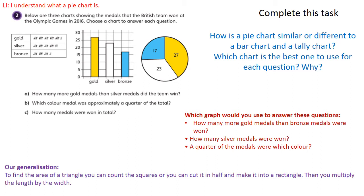How many more gold medals than silver medals did the team win? So which chart do you think is the best for working that out? Which color medal was approximately a quarter of the total? Now you're comparing to the total, so which one do you think is the easiest one to see? How many medals were won in total? So here, which chart do you think is the easiest for you to see? I'm not going to go through the answers of those because I really want you to have a go at that on your own.